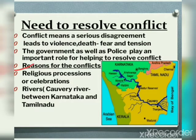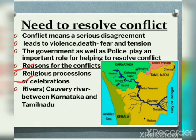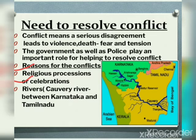One reason for conflict is religious processions or celebrations. Religious processions can sometimes lead to conflicts — for example, the route that a procession takes may lead to conflict. Sometimes there is a fear that violence may erupt, or that some people may throw stones or try to disrupt the procession. The police is responsible for ensuring that violence doesn't take place.